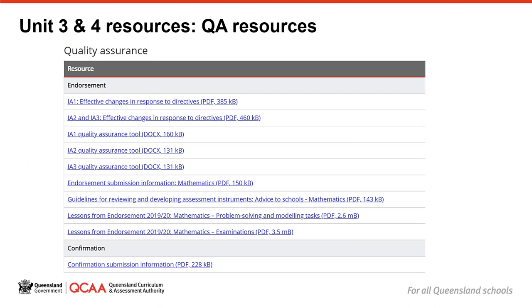Under the Quality Assurance heading, you will find quality assurance tools for each assessment instrument and guidelines for developing and reviewing assessment. This document provides advice about the amount and types of changes recommended from one year's assessment to the next. While the endorsement application allows schools to copy an assessment instrument from one year to another, it is very important that schools revise their assessment instruments to ensure that student responses are authentic, limiting opportunities for plagiarism, to ensure assessment security and to consider ways to improve their assessment instruments.